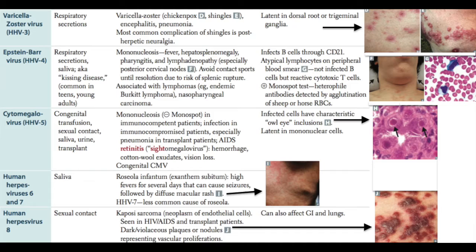HHV6 causes roseola, associated with high fevers for several days that can cause seizures, followed by a diffuse macular rash. The route of transmission for HHV6 has still not been determined. HHV8 causes Kaposi sarcoma, mostly seen in HIV patients, and its transmission is through sexual contact.